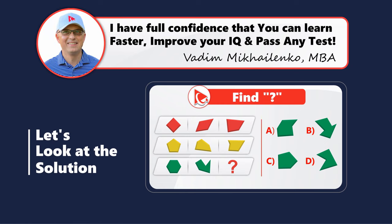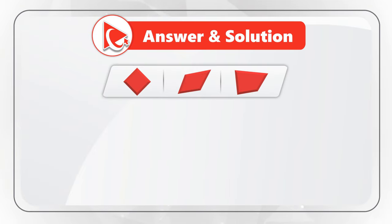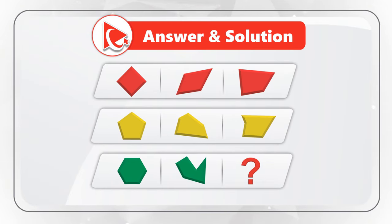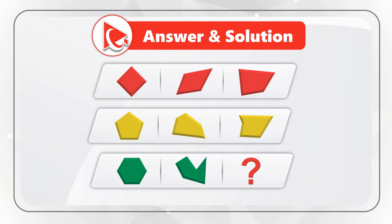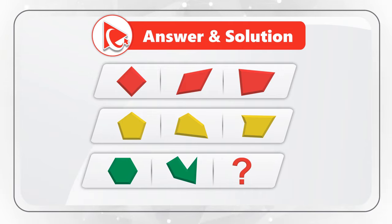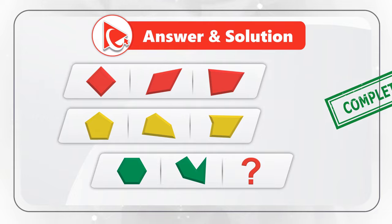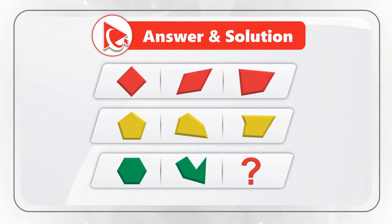What's interesting about this problem is that the objects we see here form groups based on color, and there are three groups present: the group for red objects, the group for yellow objects, and the group for green objects. The red and yellow groups are complete, but the green group is missing an object.